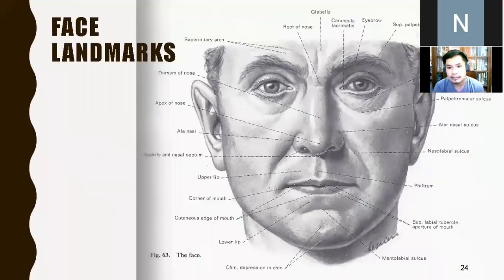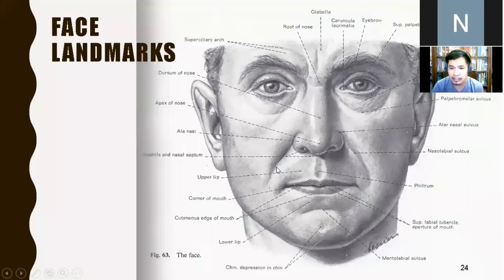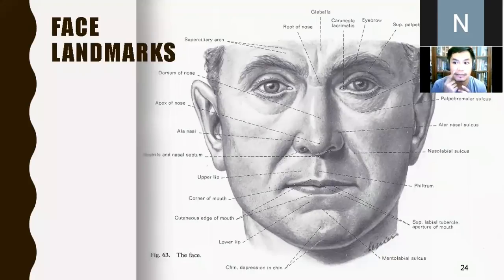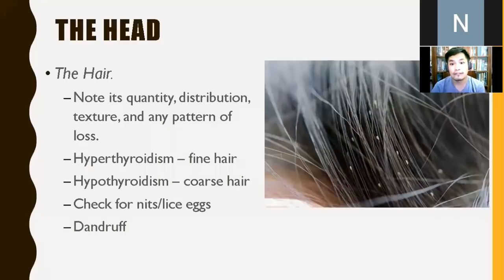The nasolabial fold — the fold between your nose and lips — is important for assessing facial symmetry. When you ask the patient to smile, notice the nasolabial fold. If there is facial paralysis on one side, that side will not move, resulting in flattening or absence of the nasolabial fold on the affected side. The nasolabial fold should be equal bilaterally.